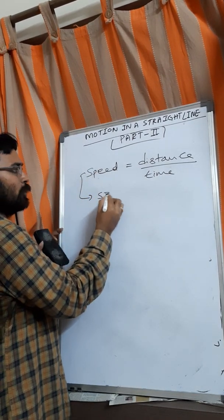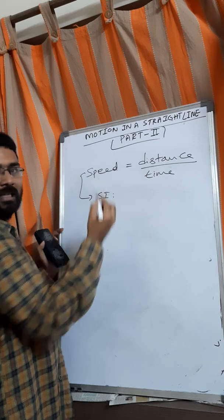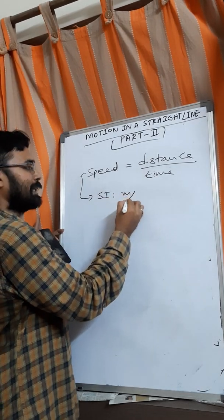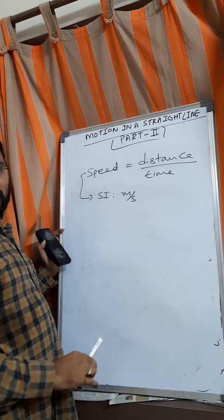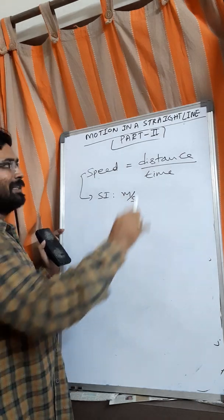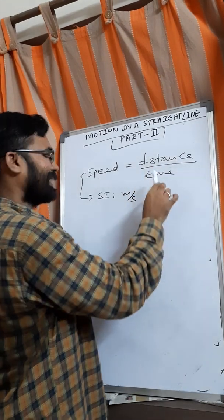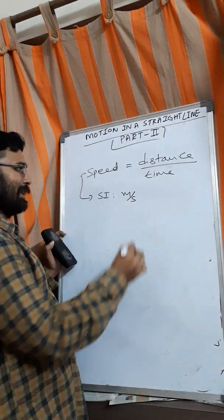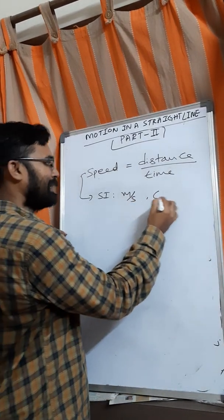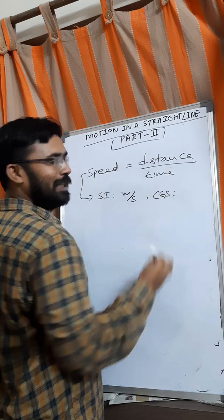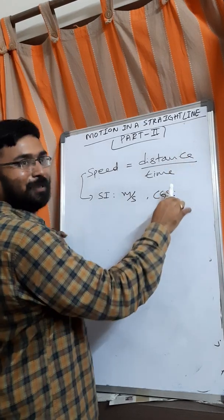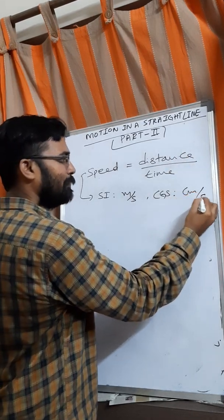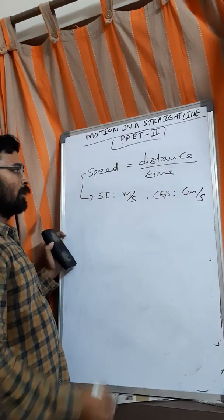Now, speed SI unit. SI unit means we can write meter per second. Distance unit is meter, time unit is seconds, so we write it as meter per second. And the CGS unit: distance is centimeter, time is seconds, so centimeter per second.